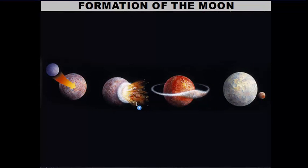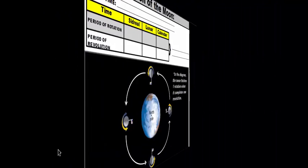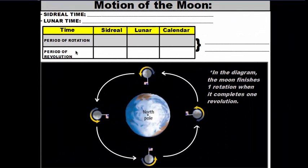So that's how the moon came to be. Now let's talk about its motions — specifically rotation, which is how long it takes for the moon to complete one spin, and revolution, which is how long it takes for the moon to move around the earth. When we discuss the period of rotation and revolution, there are a few different ways to express the amount of time.